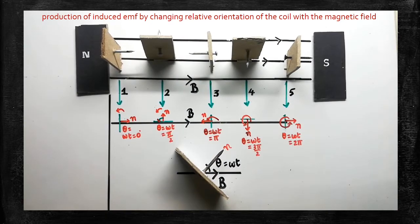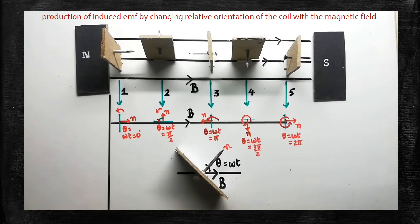Good morning students. Today you are going to learn how the EMF can be induced in a coil by changing the orientation of the coil with respect to the magnetic field. In the previous session, I explained how the EMF can be induced by changing the magnetic field and also by changing the area of the coil. Now you are going to learn the most important method — the third method.